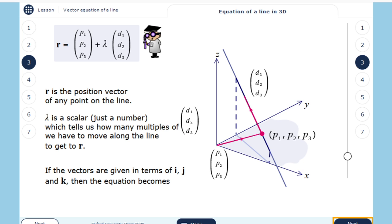If the vectors are given in terms of i, j, k, then the equation becomes p1 times i, p2 times j, p3 times k, plus lambda times d1 i, d2 j, d3 k.